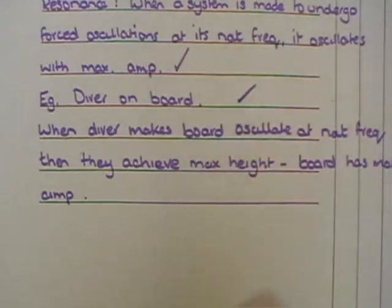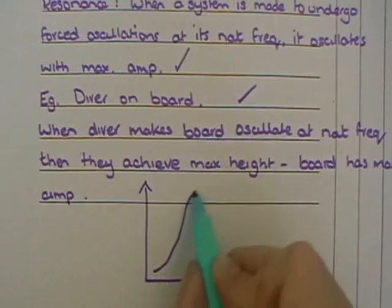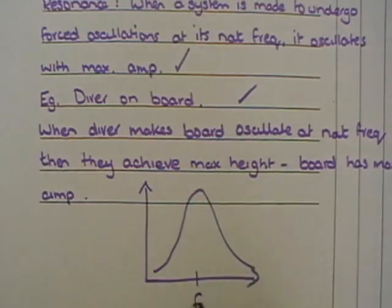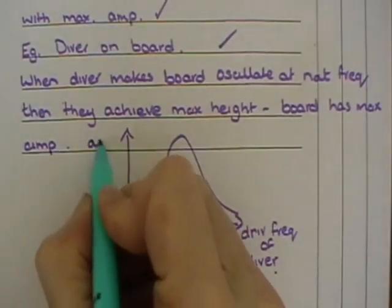And you could also then draw your graph if you want, and it's a very good idea. There's a big space left there, so it's a very good idea to do that. Draw your graph: f naught, driving frequency of the diver. It just ensures that you're definitely picking up all your marks. And then this is the amplitude.